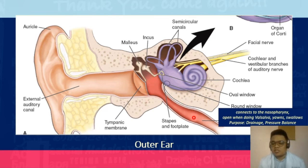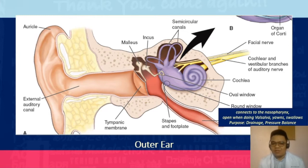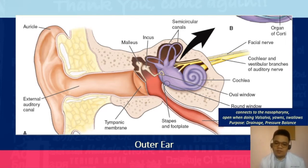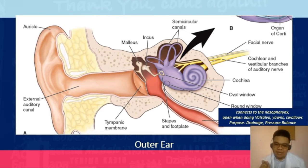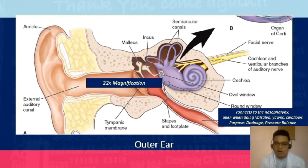The eustachian tube is part of the middle ear and connects the ear to the nasopharynx. It opens during the Valsalva maneuver, yawning, or swallowing, and serves two purposes: drainage and pressure maintenance. During plane rides, especially at takeoff, swallowing helps balance the pressure in the ear by releasing some pressure toward the nasopharynx. The structure of the outer ear allows for 22 times magnification by the time sound reaches the inner ear.